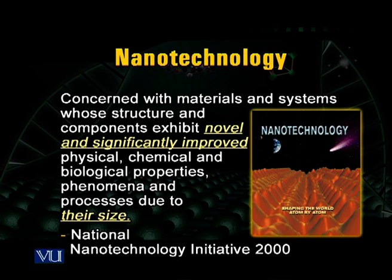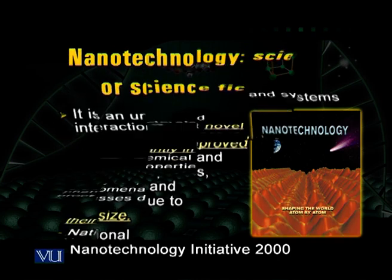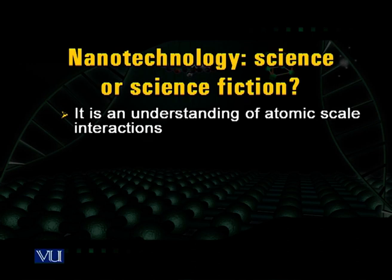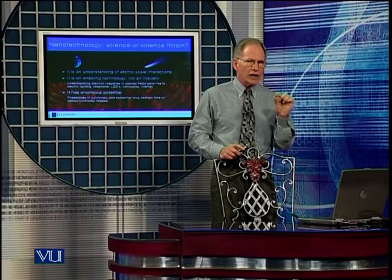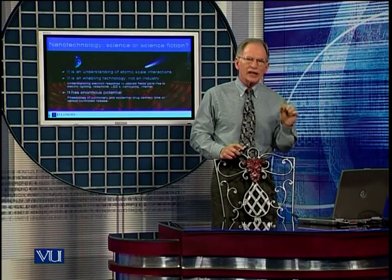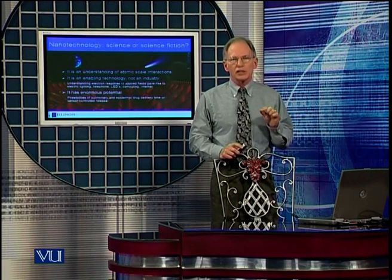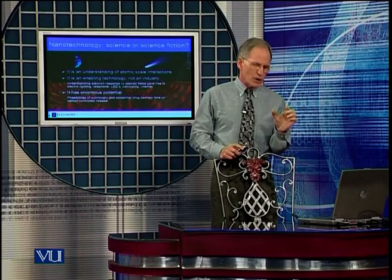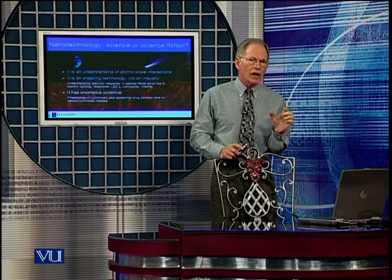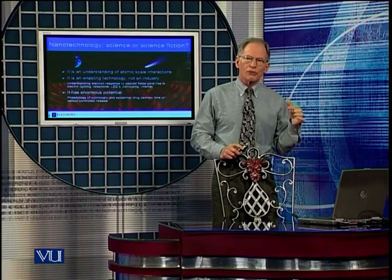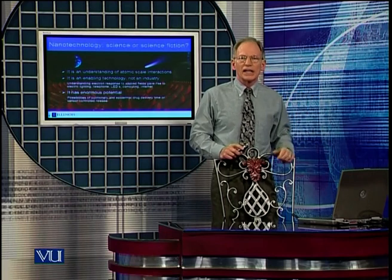That seems to be a definition which has been accepted around the world. Nanoscience — whether it's science or science fiction, you can find both, but today I'm going to talk about the science. Nanoscience is the understanding of atomic scale processes — understanding, not necessarily manipulation. The atomic scale defines the size of an atom, and about three or four atoms in a row would be a nanometer. So if we think of a cubic nanometer, we're thinking about three by three by three, roughly 30 atoms making up my particular system.